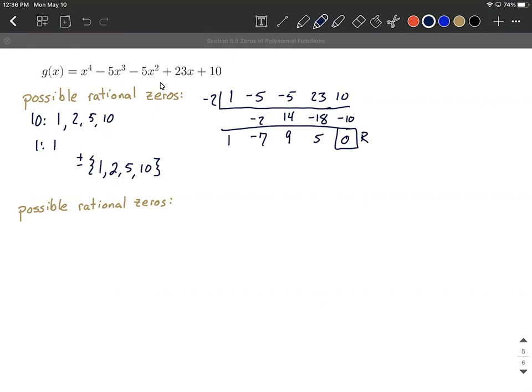So from here, what we can do is we can rewrite our original function g of x as the divisor, because we tested a negative 2. We were dividing by x plus 2 multiplied by the quotient. The quotient is going to be given by these values at the bottom. So the quotient. These are actually the coefficients for our quotient. So it goes constant x to the first x squared x cubed. So I can list this out as 1x cubed minus 7x squared plus 9x plus 5 as our quotient.